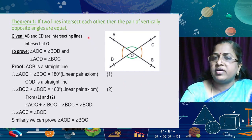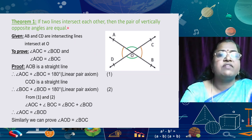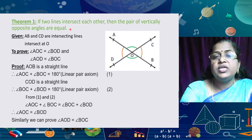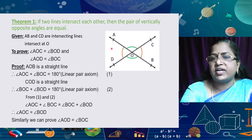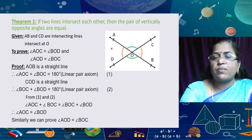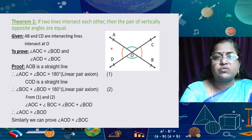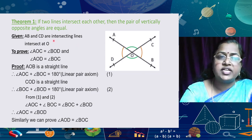For proving the theorem, first we draw a figure. Here AB and CD are two intersecting lines, and the point of intersection is O. From the theorem itself you write what is given and what is to be proved. Given: AB and CD are two intersecting lines intersecting at O. Some students mistakenly write the theorem statement as 'given and to prove,' but you must write it from the figure.